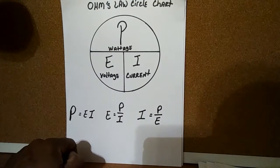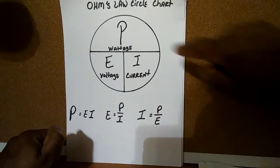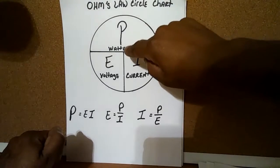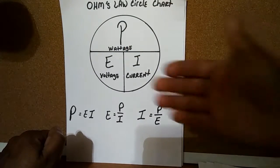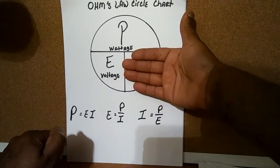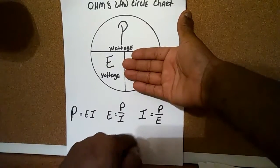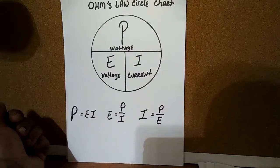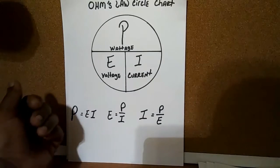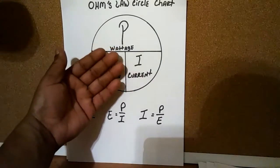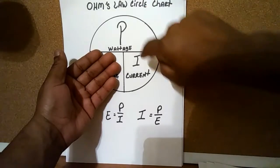Or if you were given a known value of E and a known value of P, but your unknown is I, you would cover the I, which would leave you with P over E — that formula here. Or if you were given a known value of P and a known value of I, and E was your unknown, you would cover your unknown which is E, and it leaves you with P over I.